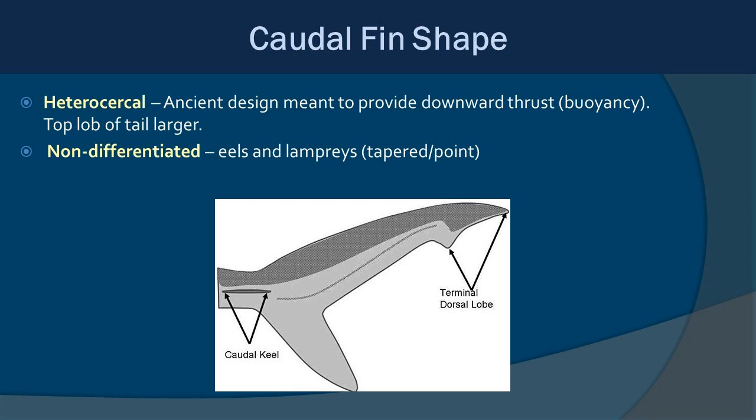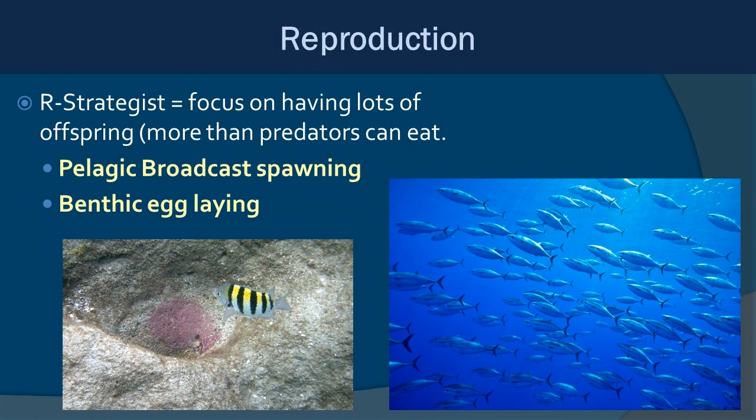In terms of reproduction, we'll refer back to R and K strategists. Fish generally represent R strategists, which means they tend to have lots of offspring, most of which die — there's little to no parental care. This contrasts with K strategists, which mammals tend to be — they have few offspring but invest heavily in making sure they survive. Fish are quantity, not quality; hopefully a few will survive to adulthood and reproduce.